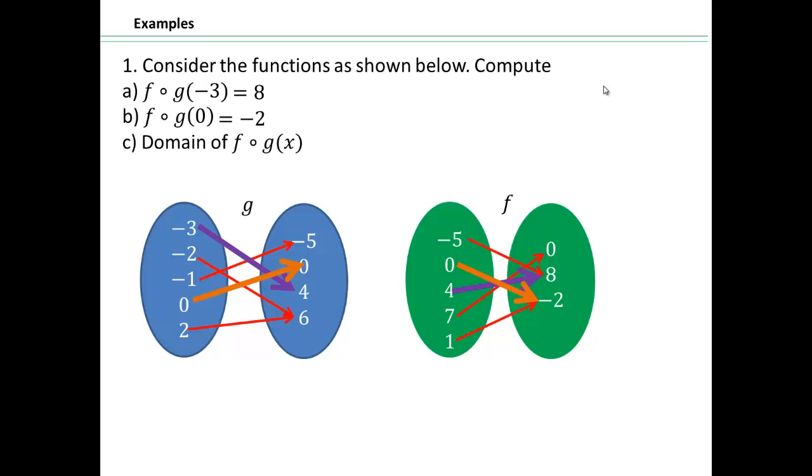All right. What about domain then? The domain, you have to look at all the elements in this set here that can be carried all the way to the end here. We already saw negative 3 is in the domain because we went from negative 3 to 4, 4 to 8. What about negative 2? Negative 2 goes to 6. Uh-oh. 6 cannot be carried by the function f. So 6 is not here. And so that means what? Negative 2 will not be in the domain of the composite function, even though negative 2 is a part of domain of g.